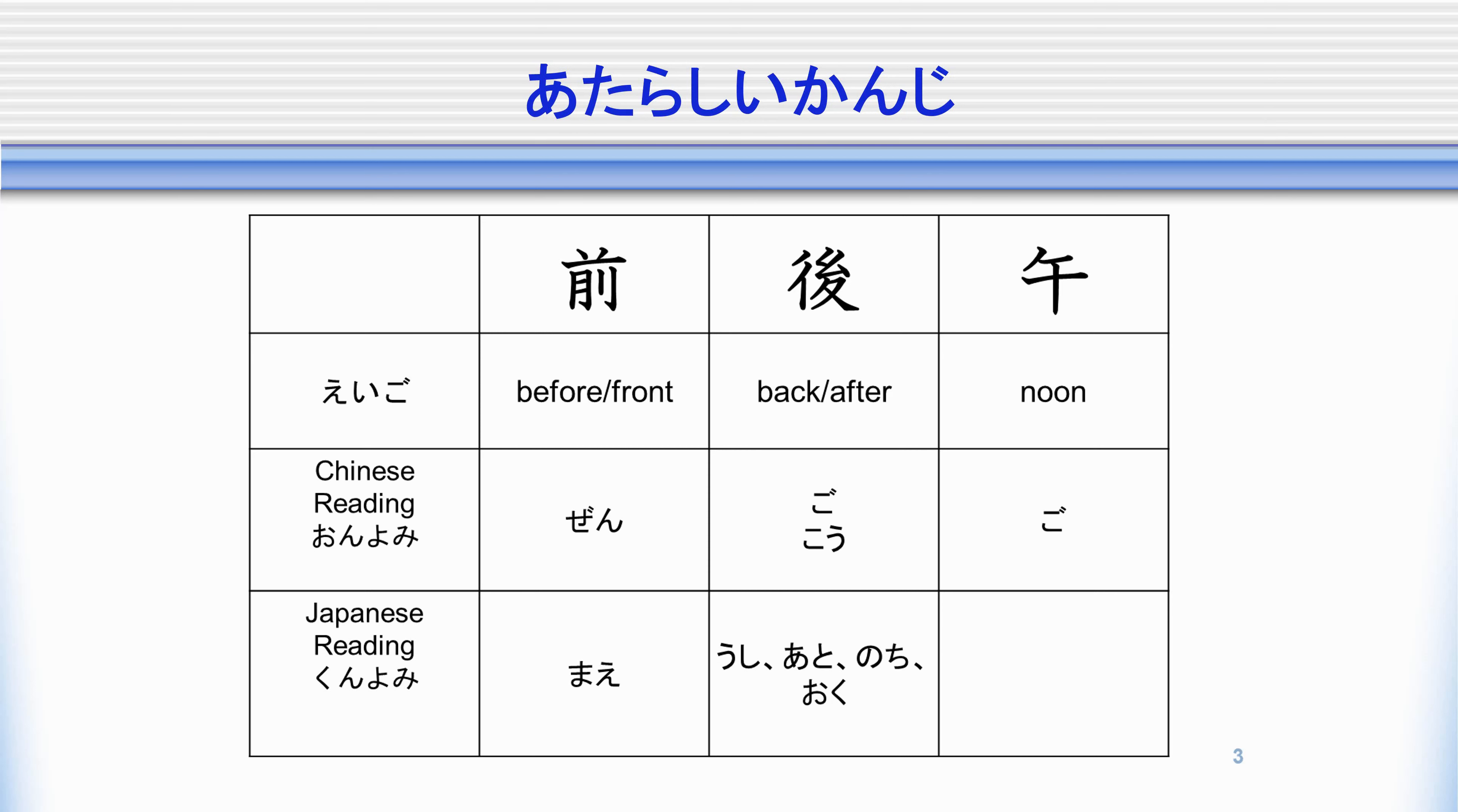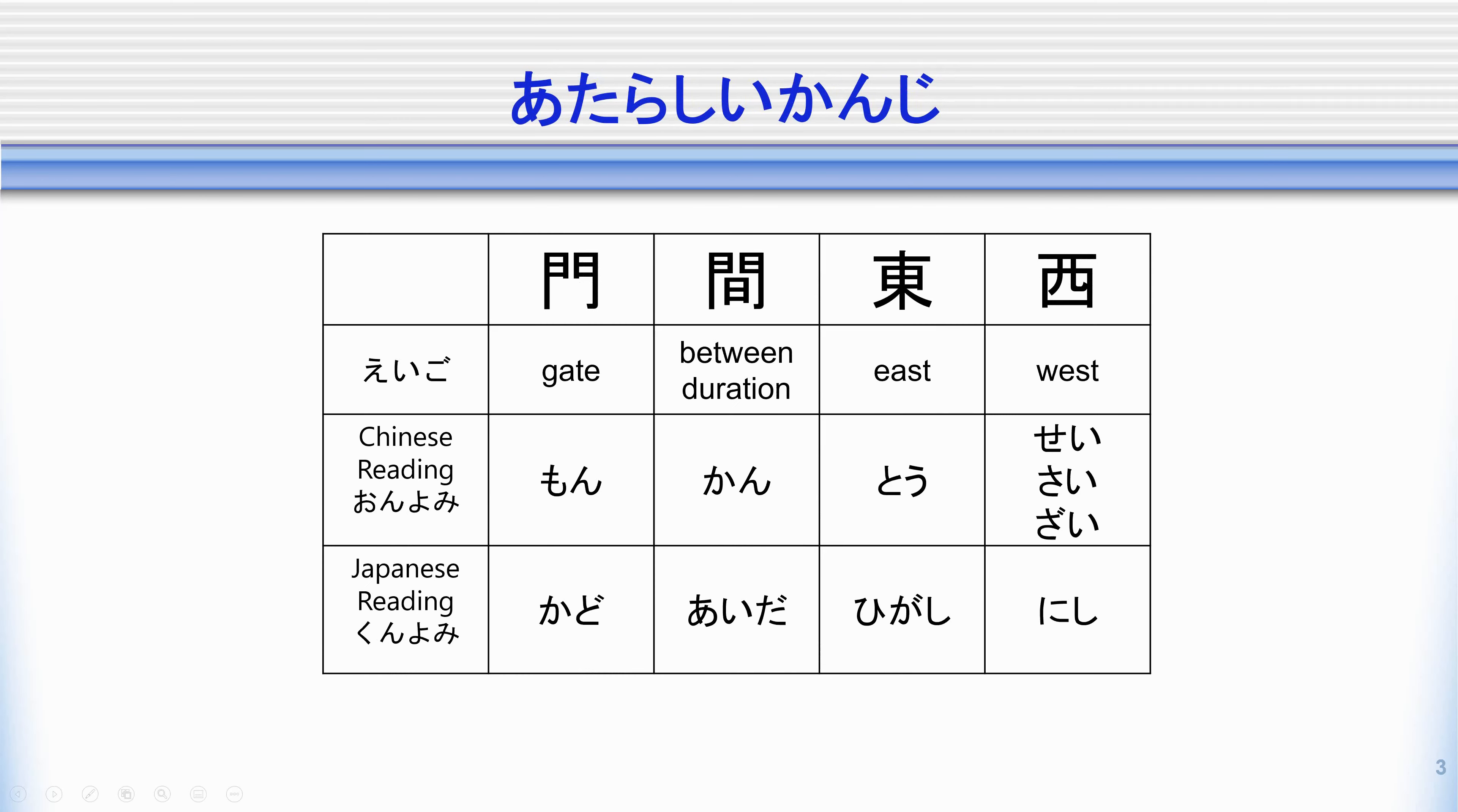Our next kanji is the ushi in ushiro. It's the ushi part of ushiro. We also use it as the second go in gogo. So gogo, which means PM, right? So afternoon has gogo. And we will learn the go, which is the first kanji in gozen and gogo meaning noon.